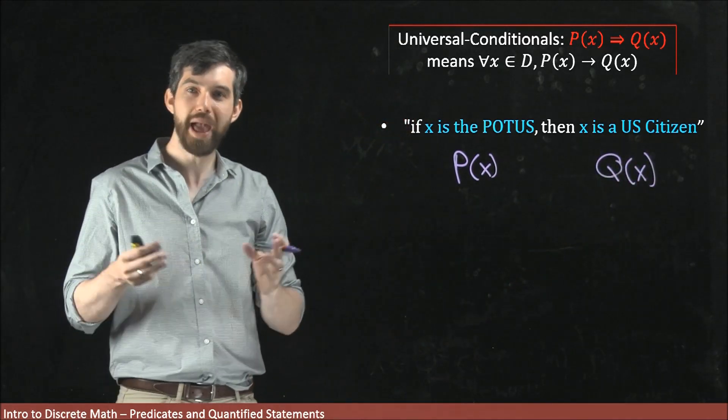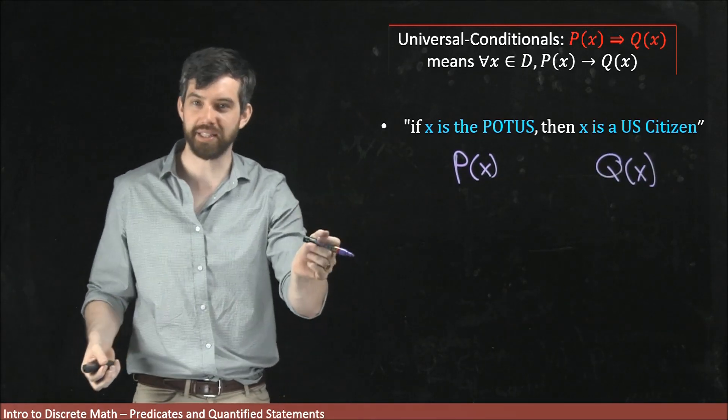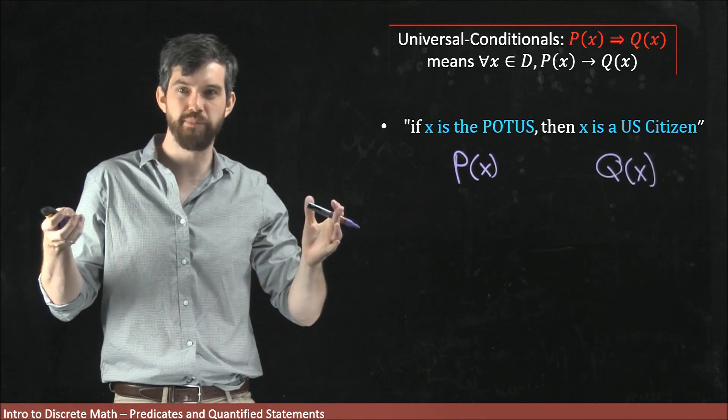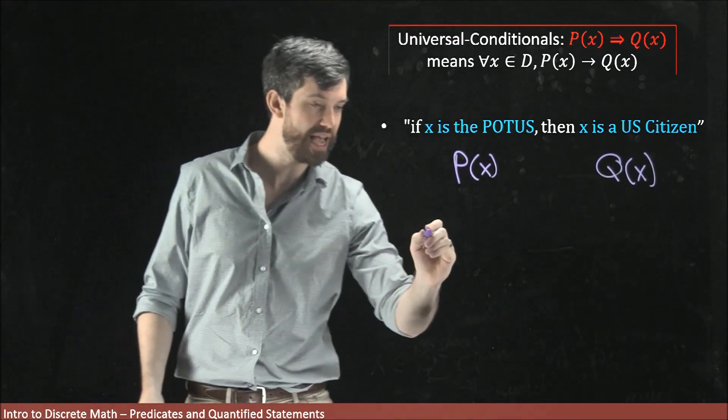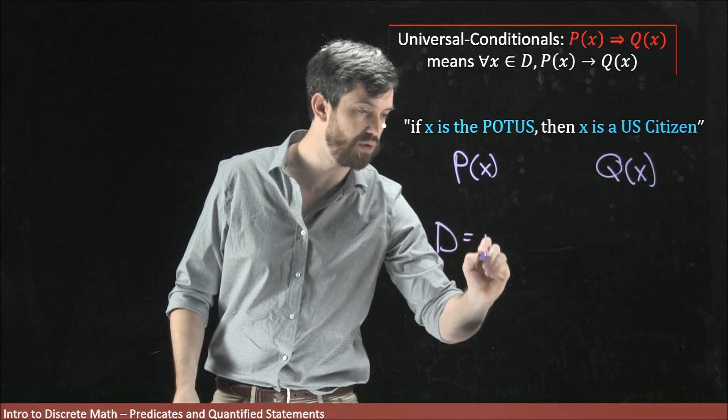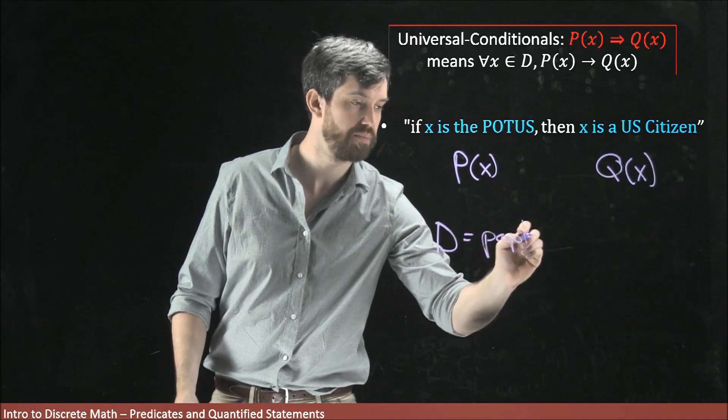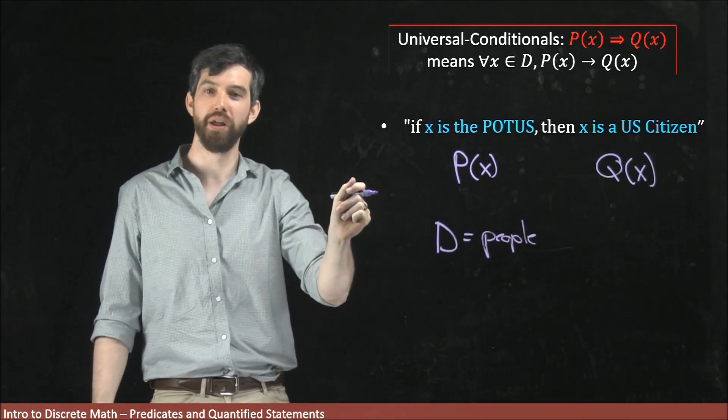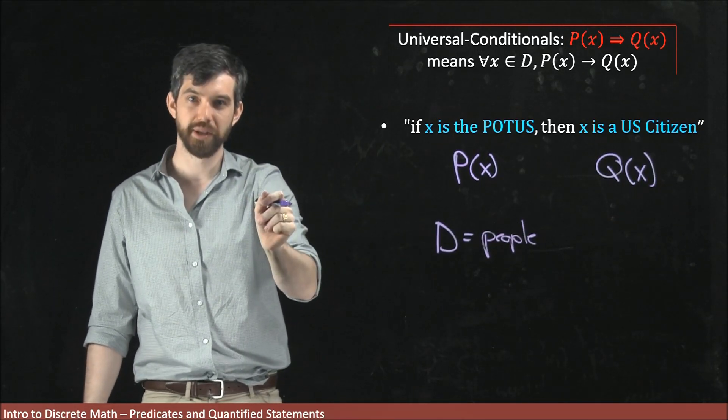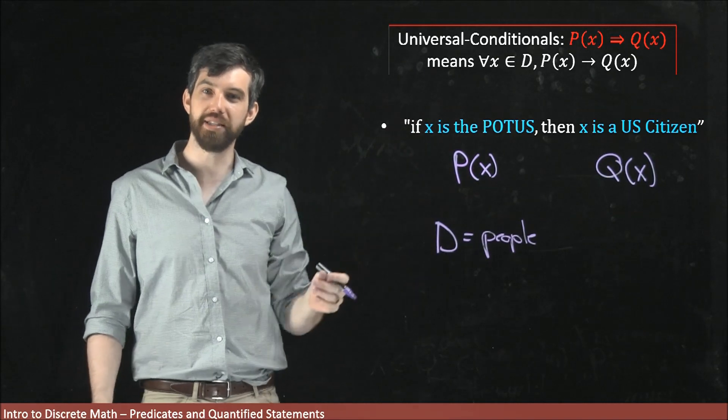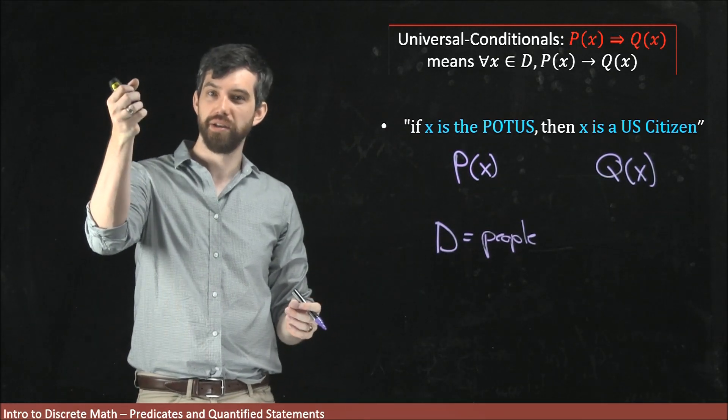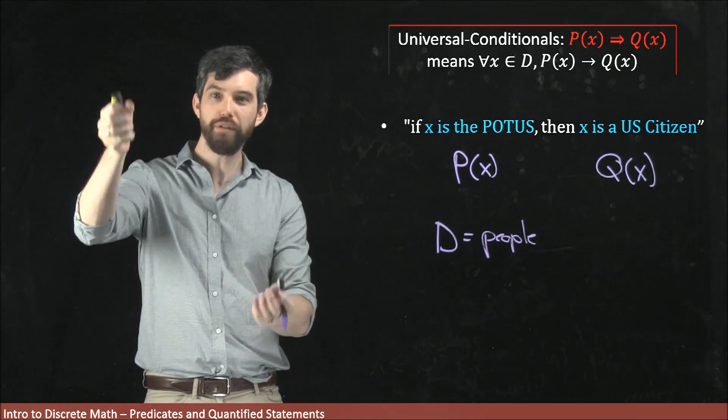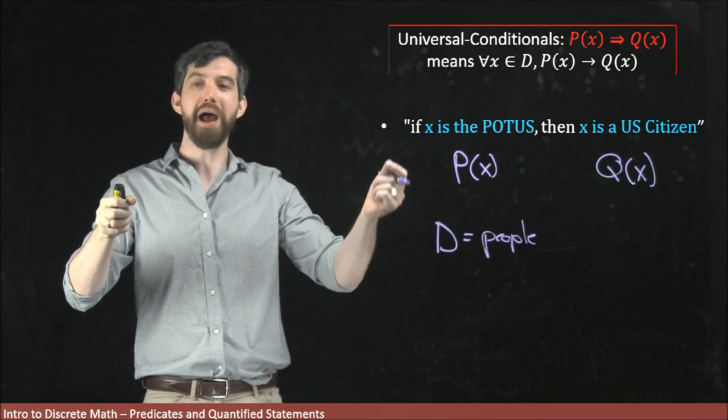Depending on what your x is, if x lives in the universe of people—if I set my domain to be equal to just humans—some of those people are US citizens, some are US presidents. What this claim is saying is that all of the ones that are US presidents, that set of people throughout history, all of those people are US citizens.